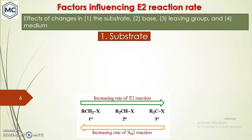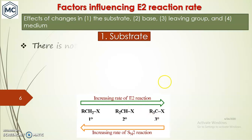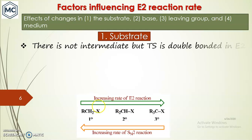Next, what are the factors affecting E2 reaction — E2 elimination being bimolecular? The same factors affect the reaction rate: substrate, base, leaving group, and medium. For substrate, in SN2 reaction primary is more reactive than secondary, which is more reactive than tertiary due to steric hindrance. But in E2 it is different — tertiary is more reactive than secondary, which is more reactive than primary, because there is no intermediate in E2.